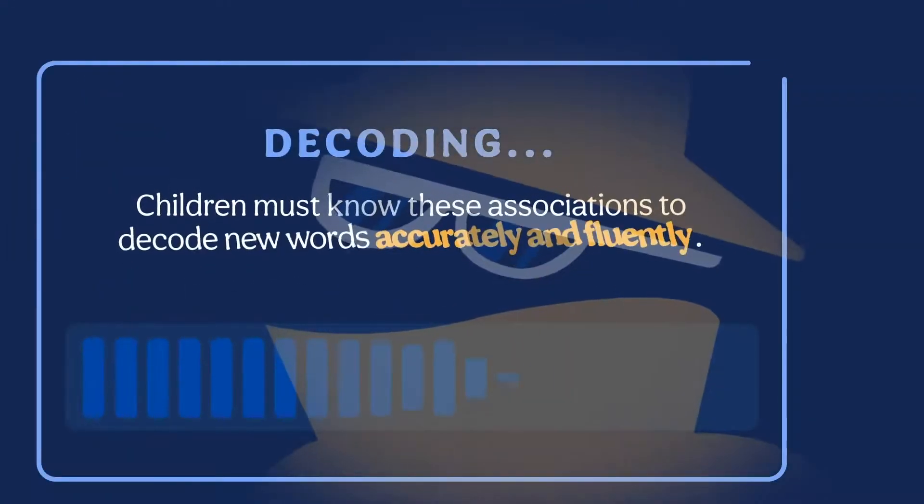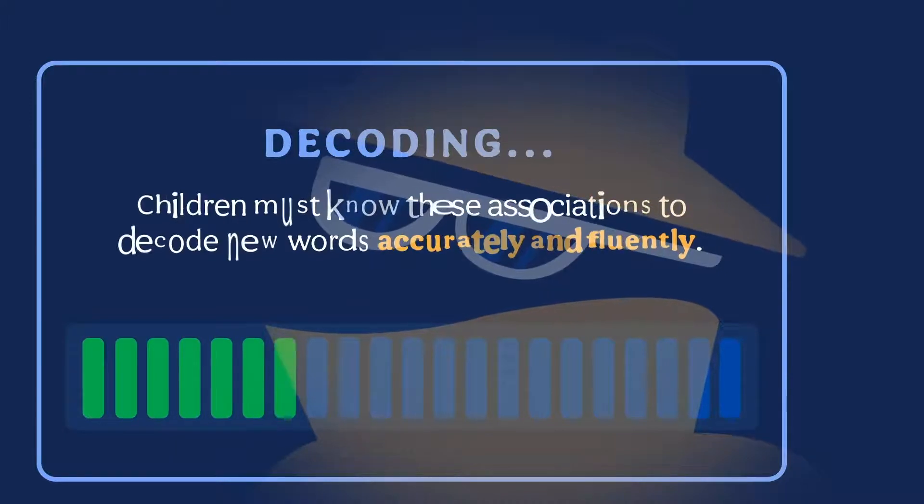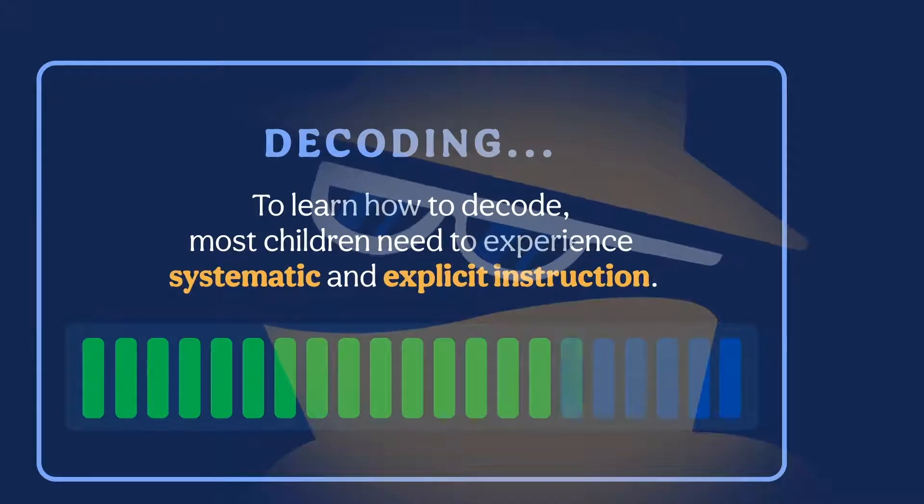Children must know these associations to decode new words accurately and fluently. To learn how to decode, most children need systematic and explicit instruction.